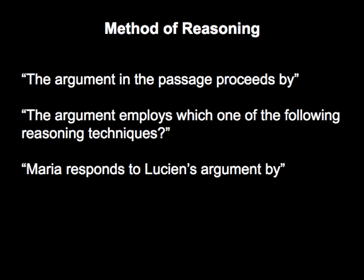Method of reasoning questions require you to determine how the author goes about making their argument. Key phrases in the question stem include 'methods of reasoning,' 'argument proceeds by,' 'so-and-so responds by,' or 'employs certain strategies.' You want to determine the type of evidence used to support the conclusion — do they use a study or survey, or make an argument by analogy? You can improve your understanding of abstract logical reasoning language by looking up definitions of words and phrases in both right and wrong answer choices.